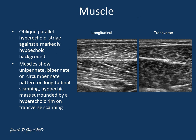The muscle appears as oblique, parallel, hyperechoic stripes against a markedly hypoechoic background. The muscles show a unipennate, bipennate, or circumpennate appearance when seen on the longitudinal scan, and they look like a hypoechoic mass surrounded by a hyperechoic rim on a transverse scan.